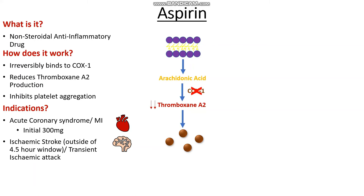We may also use aspirin in things like ischemic strokes when the patient presents after four and a half hours, or we don't know when they initially had symptoms, or in transient ischemic attacks — when an embolus blocks off one of the arteries of the brain but clears spontaneously. When we have a confirmed ischemic stroke or a TIA, we give a high dose of aspirin of around about 300 milligrams to stop further clotting. Lastly, we may also use aspirin in things like stable ischemic heart disease or stable angina, and after stabilization of the patient following an MI, using a much smaller dose of around about 75 milligrams.